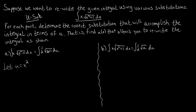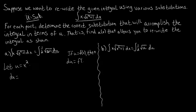If we let u equal x squared, in order to use u-substitution we first have to pick our u, but then we have to find our du, because we essentially want to integrate with respect to u. Using the definition of the differential: if u is some function of x, then du equals f prime of x times dx.